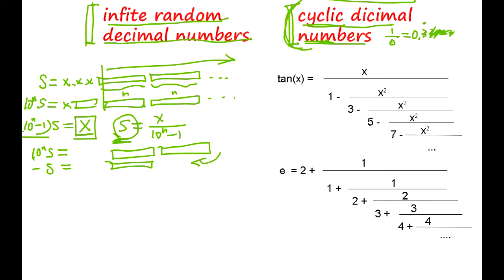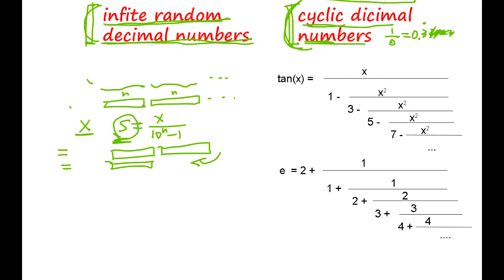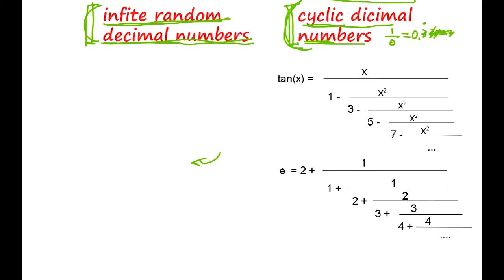It's a necessary and sufficient condition that rational numbers are cyclic decimal numbers, and irrational numbers are necessarily sufficient condition to be infinite random decimal numbers. Infinitely randomly generated decimal numbers are always irrational numbers. So we have two different definitions now.